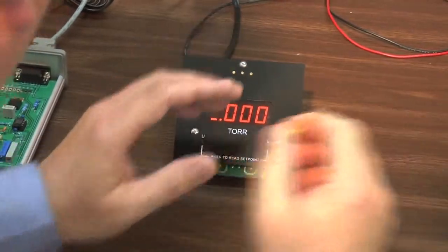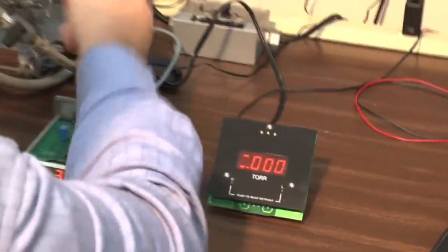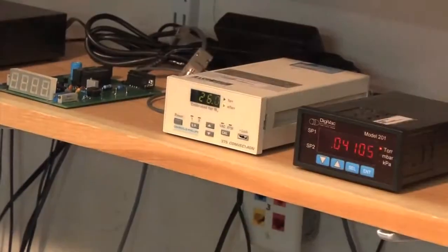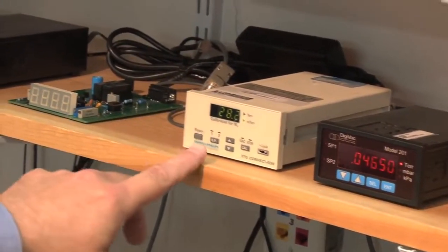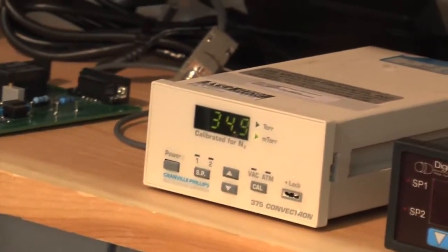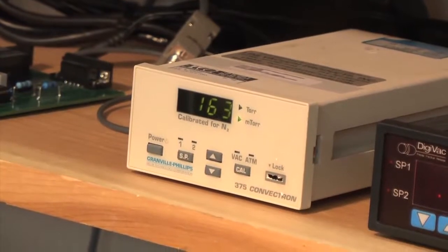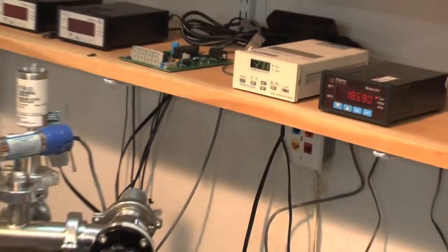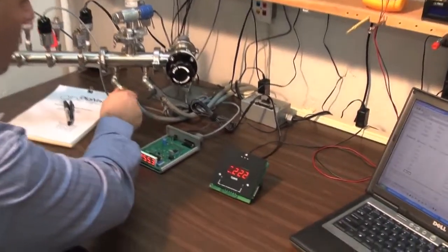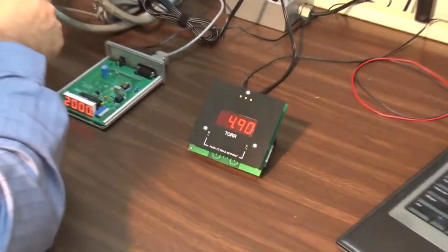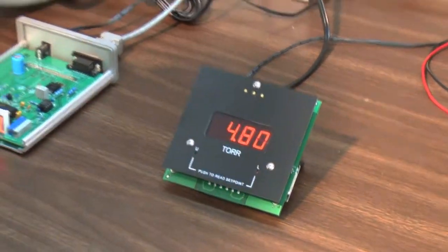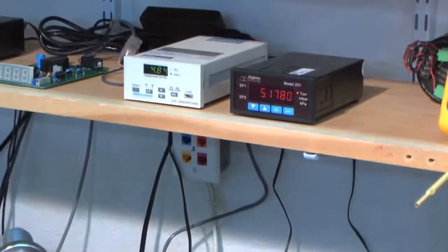If the reading is stabilized, we can stop our vacuum system and observe readings on the way up back up to atmosphere. Our convectron indicates approximately 30 mil torr, 29. We can introduce more dry nitrogen. 238 mil torr, 217 on the 801W, an acceptable reading. We'll look at some higher readings. 4.84 on our convectron, 4.80 on 81W.